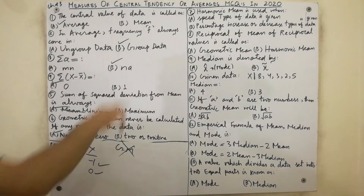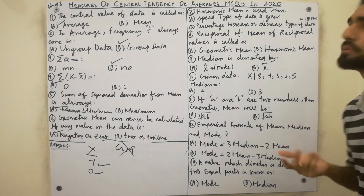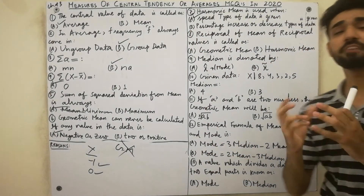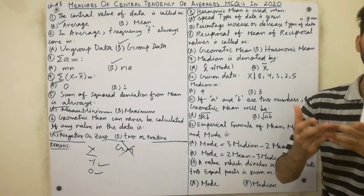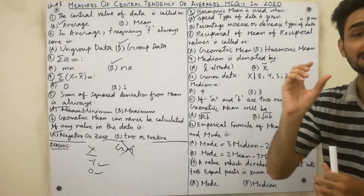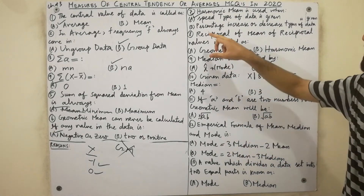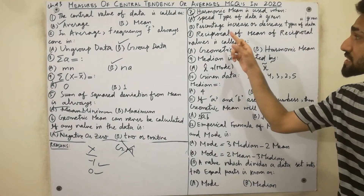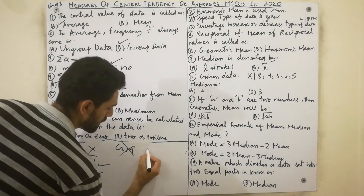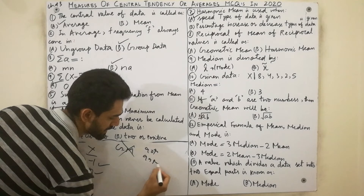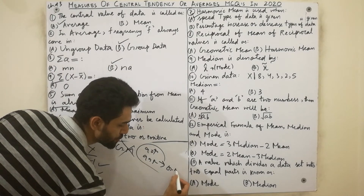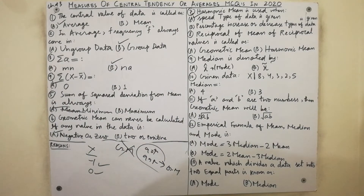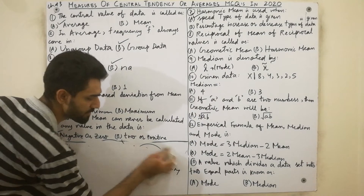The seventh MCQ: harmonic mean is used when we have speed-type data. For example, speeds like 20 km/h or 50 km/h — when we have speed data, we always use harmonic mean. The eighth MCQ: geometric mean is always used when we have percentage increase or decrease types of data — for example, 90% or 99%. So for percentage data use geometric mean, and for speed data use harmonic mean.